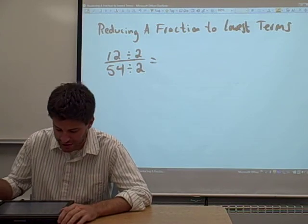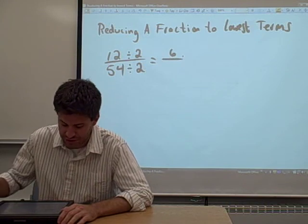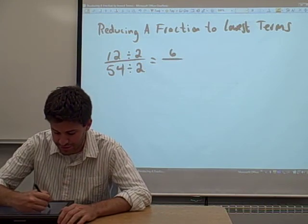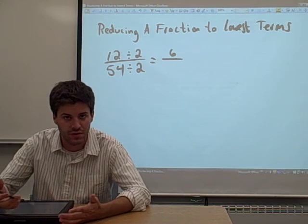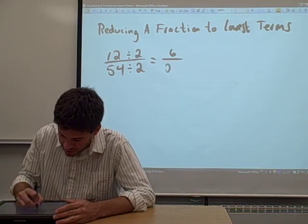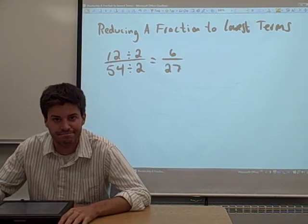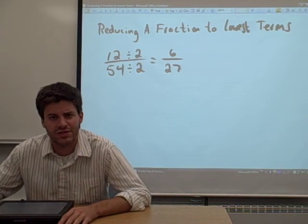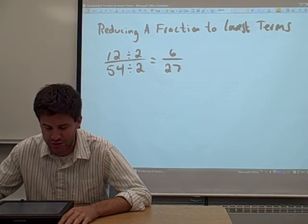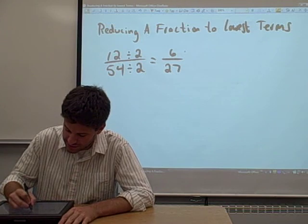What we get when we do that is we get 6. 12 divided by 2 equals 6 in the numerator. 54 divided by 2, you could either do the long division or you could just know that that is 27. Then you might think to yourself, well, could we do that again? And the answer is yes, you can.